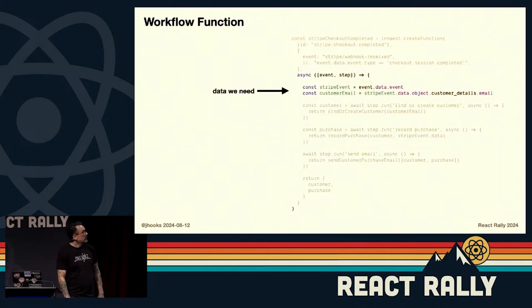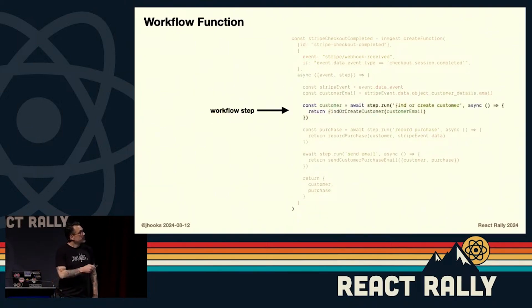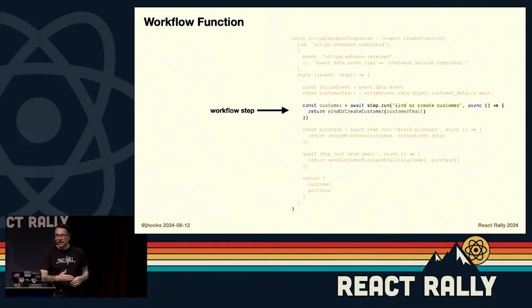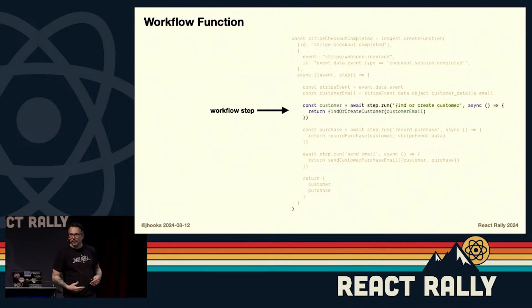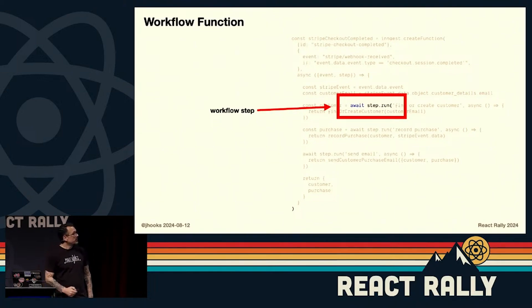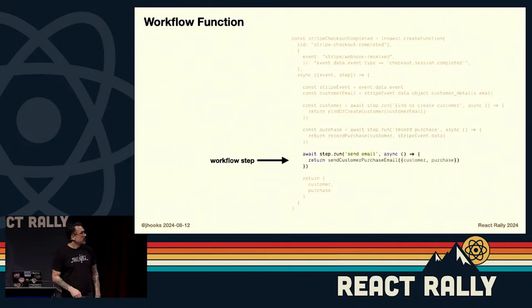In the handler function we fetch the customer data, and what's interesting is each step memoizes its result. If you've ever seen a Stripe webhook keep retrying with logarithmic back-off to keep your data safe — this is where durability comes in. If this fails or throws an error, Inngest is going to retry this function, and you have an opportunity to fix it while it's retrying. You can push a hotfix to main and it will pick up from where it left off. All the logic you want that safety blanket around needs to happen within a call to step.run. Finally we record the purchase and send the email.